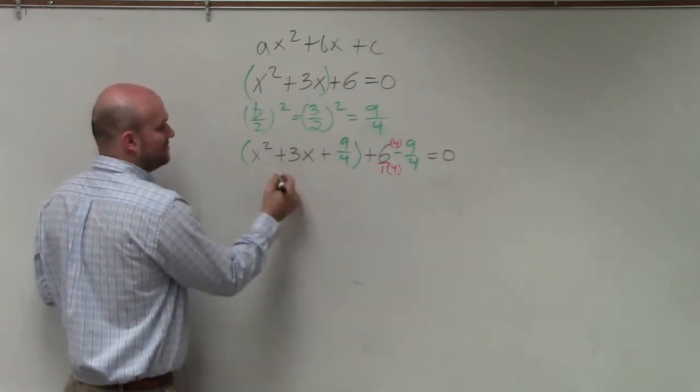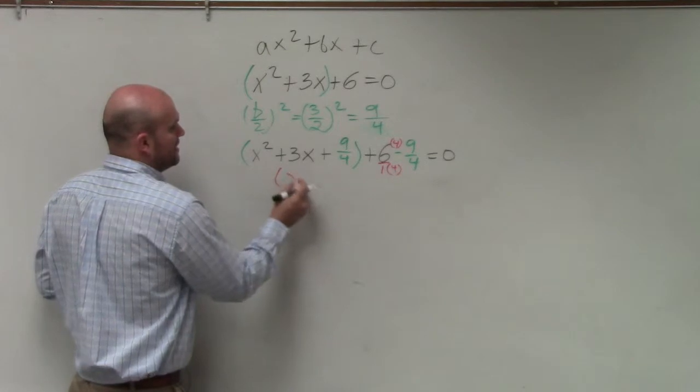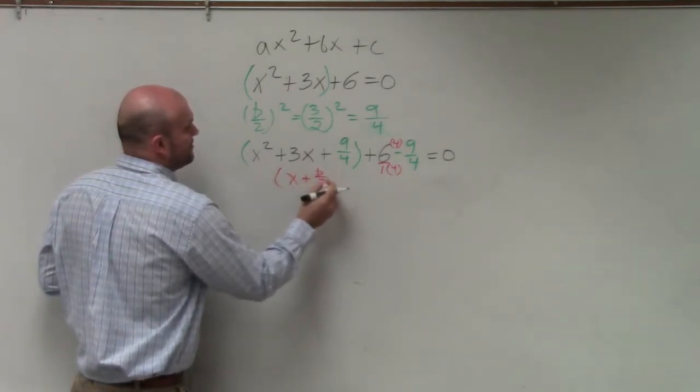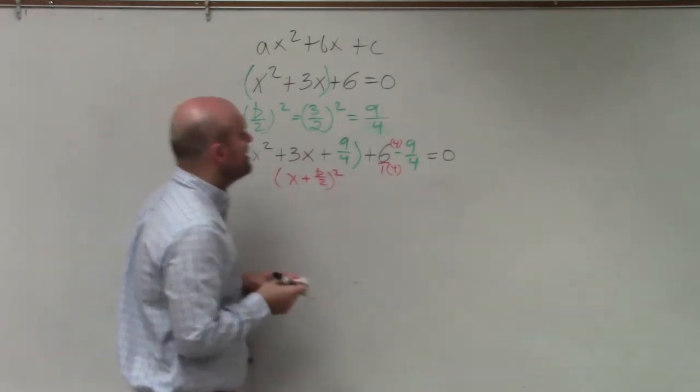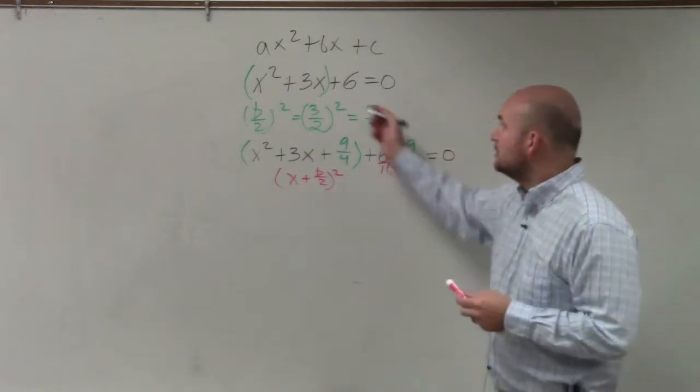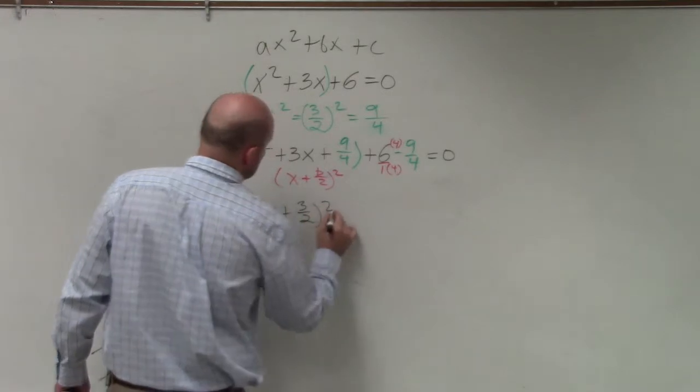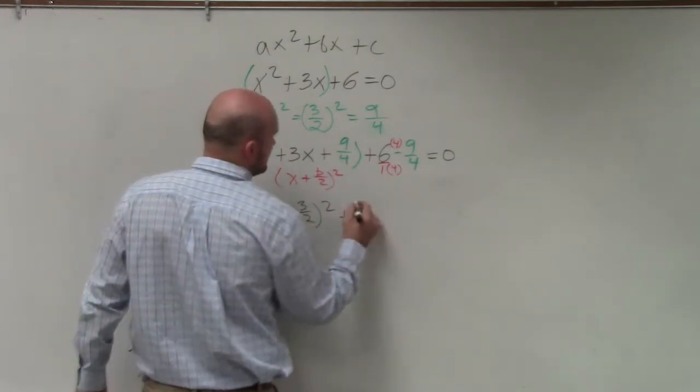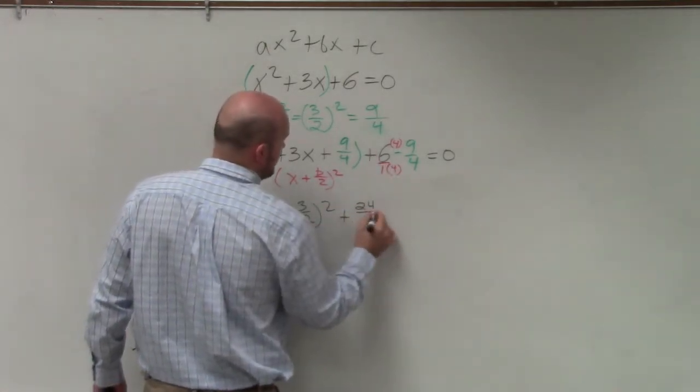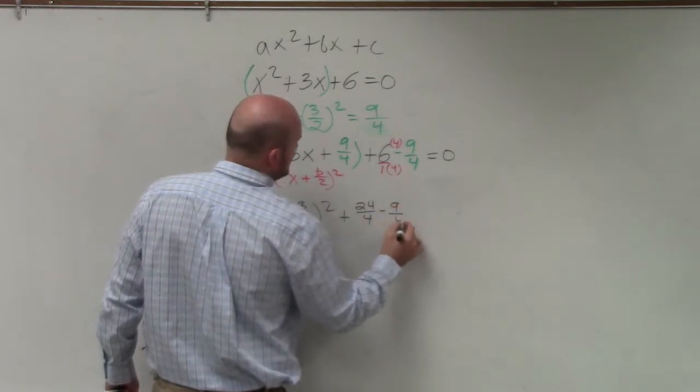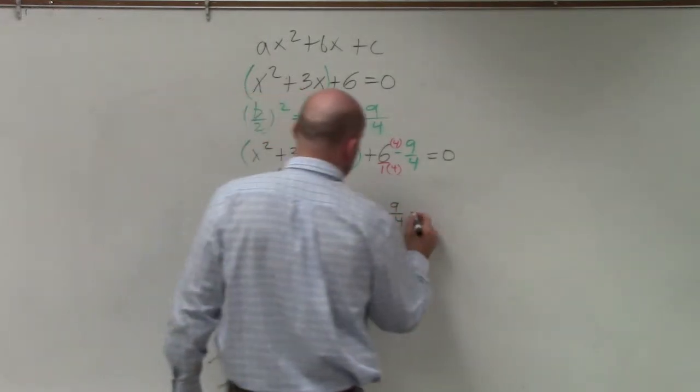Then this factors down. Remember, is x plus b divided by 2 squared. What was my b divided by 2? 3 halves, right? So therefore, this goes to x plus 3 halves squared plus 6 times 4 is 24 over 4 minus 9 over 4 equals 0.